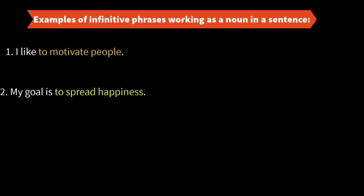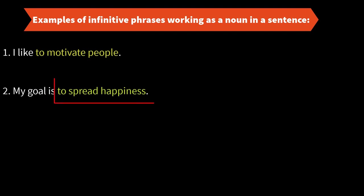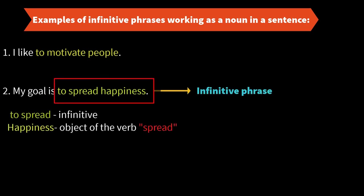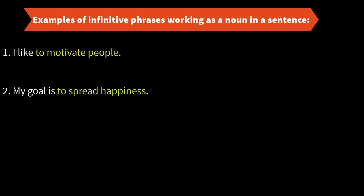Next example: My goal is to spread happiness. 'To spread happiness' is the infinitive phrase. 'To spread' is the infinitive and 'happiness' is the object of the verb 'spread.' This complete phrase 'to spread happiness' is working as a noun. My goal is what? To spread happiness.